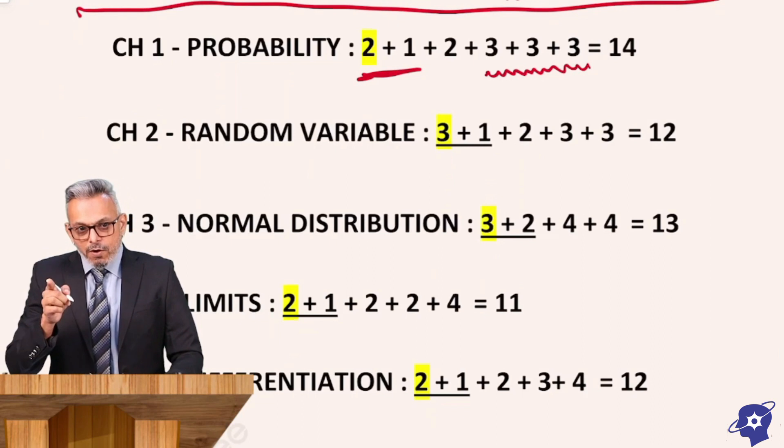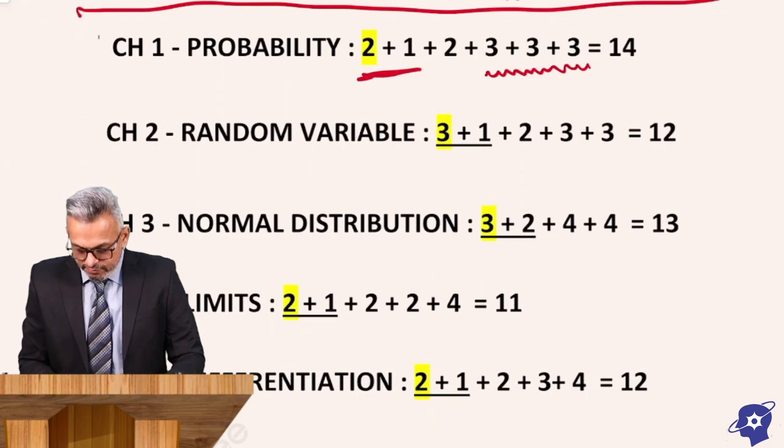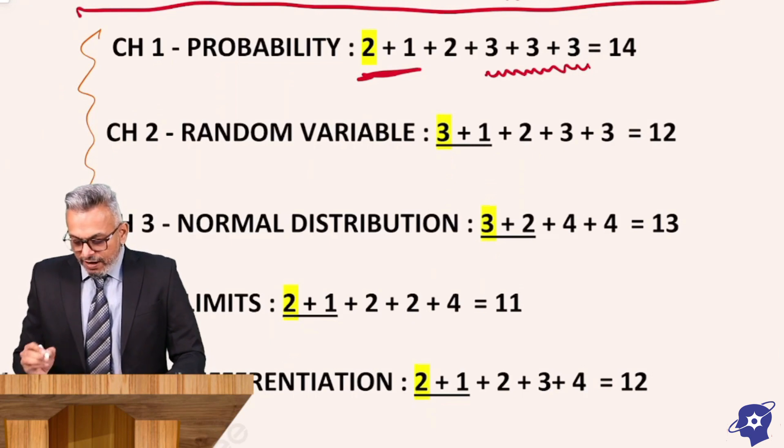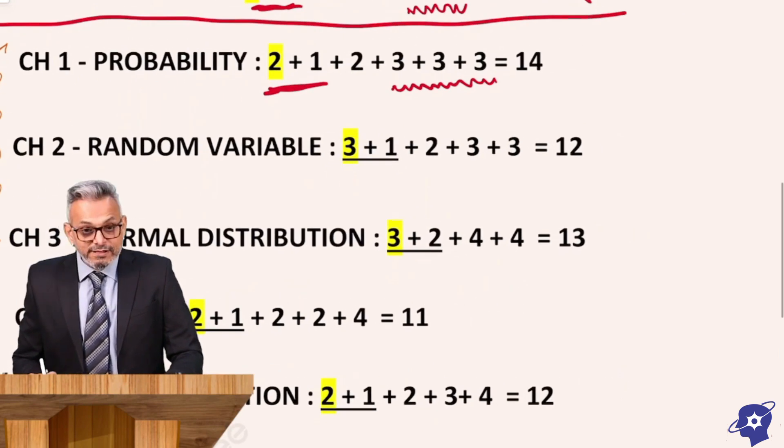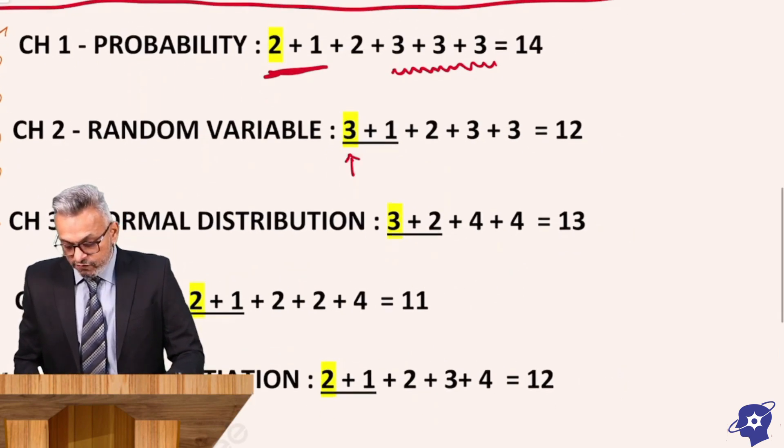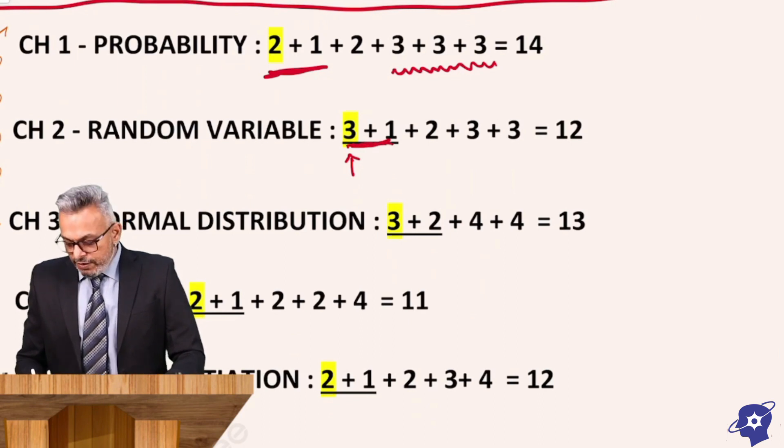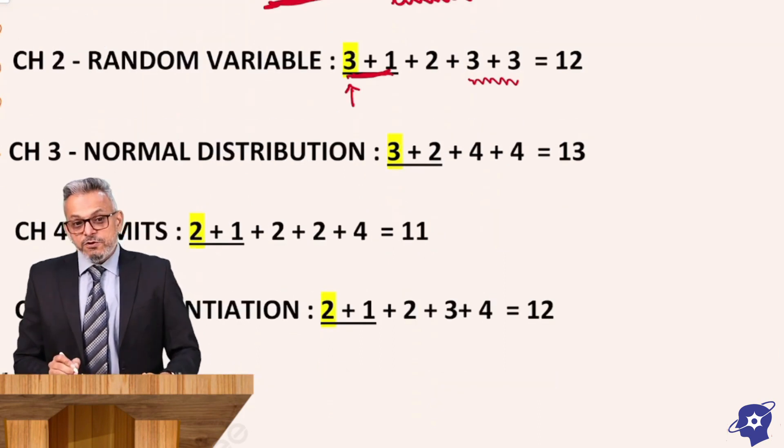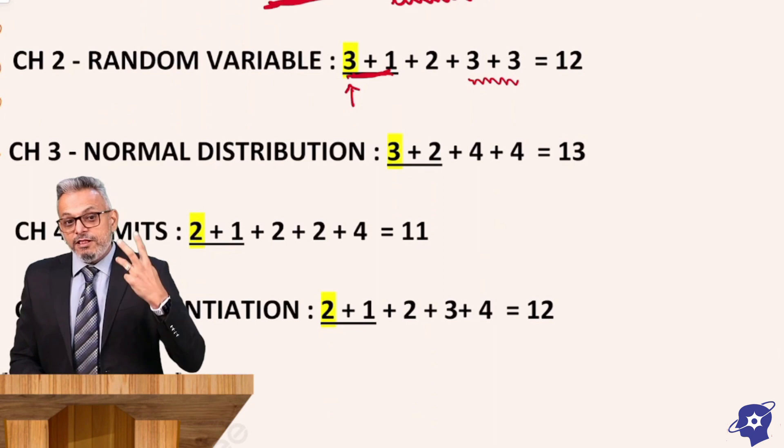Chapter 2 Random Variable. Again, chapter 1, chapter 2 and chapter 3 are all connected with each other. Chapter 2 is Random Variable and Discrete Probability Distribution. Here there is a typical thing - you have multiple choice question of 3 marks. So 3 + 1 already underlined, plus 2 plus 3 + 3 options, which comes to 12 marks.